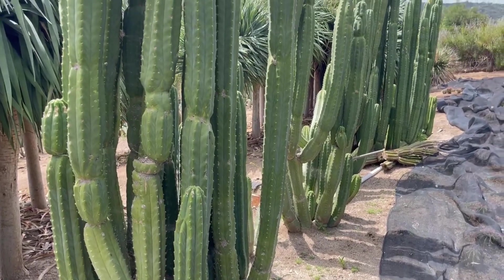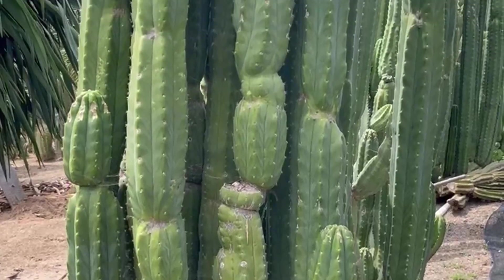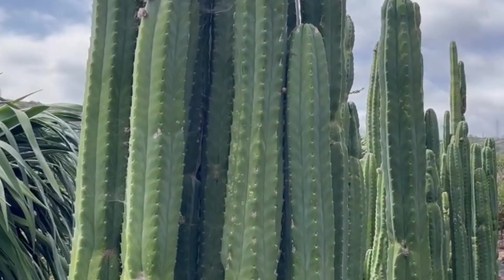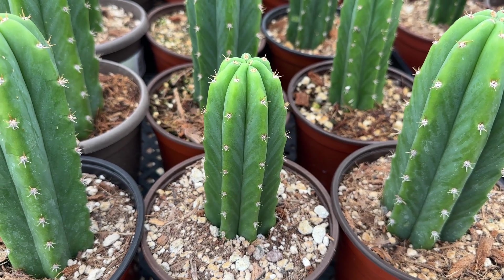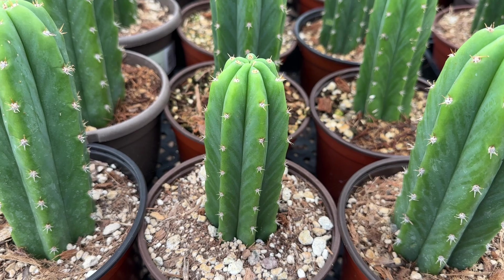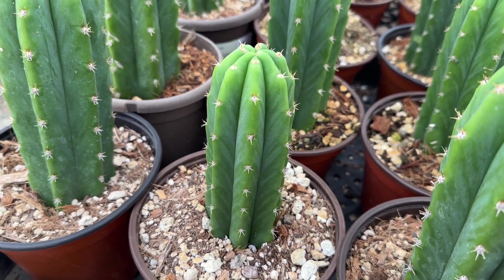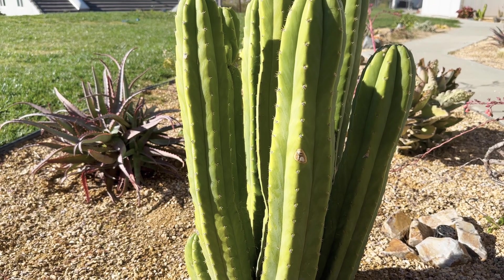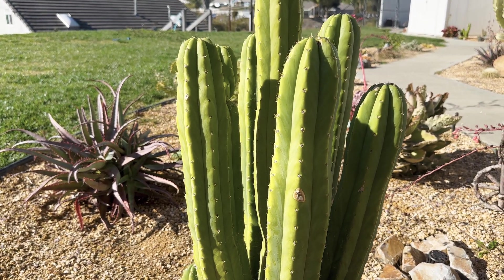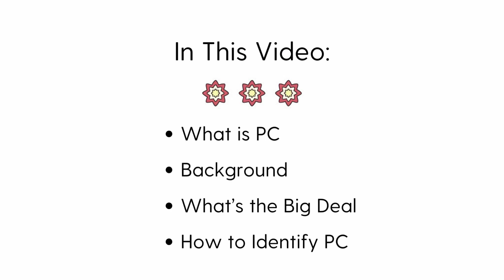If you've ever done a deep dive into San Pedro cacti, chances are you've encountered the term PC San Pedro, or PC Trichocereus. This mysterious plant is often sought after for its ornamental beauty, but has caused quite a stir among experts and hobbyists alike, and is a source of quite a bit of controversy. But what exactly is PC Trichocereus, and why is it so significant? In this video, let's delve into its history, appearance, and the unique characteristics of this plant.